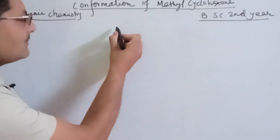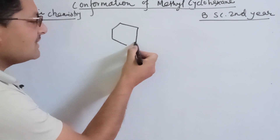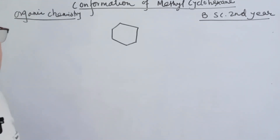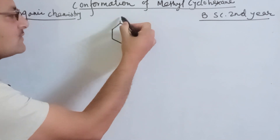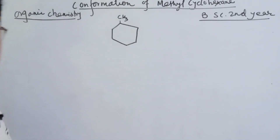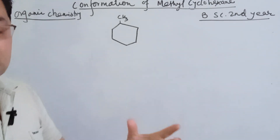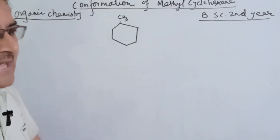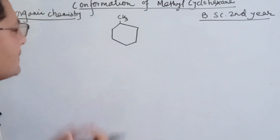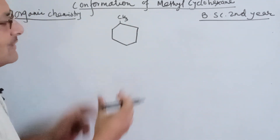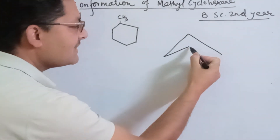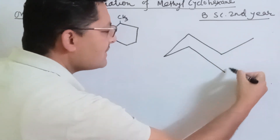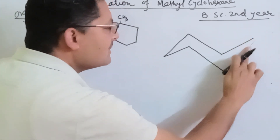So you can make methylcyclohexane. You can make cyclohexane — this is what I'm trying to make, but I'm going to show you the methylcyclohexane. What are the conformational stocks of methylcyclohexane? What's the difference? If you have a cyclohexane, I've already shown the cyclohexane.